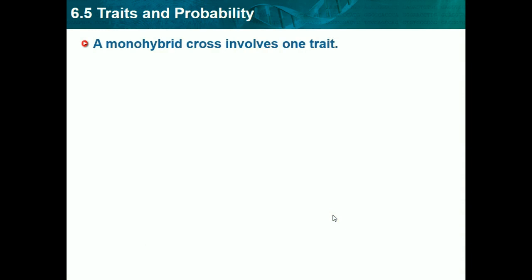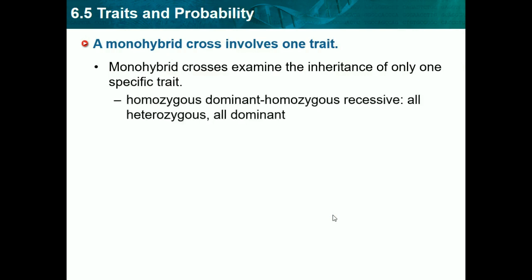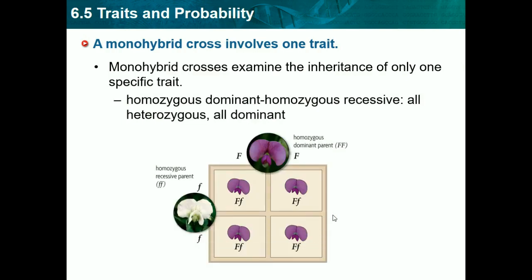A monohybrid cross involves one trait — that's what we just did. A monohybrid cross examines the inheritance of only one specific trait. If you use different alleles, you get different outcomes. In this case, we're going to use a homozygous dominant, which would be capital F, capital F. And here we're using a homozygous recessive, which would be lowercase f and lowercase f.